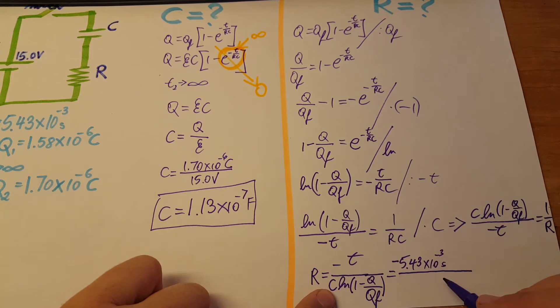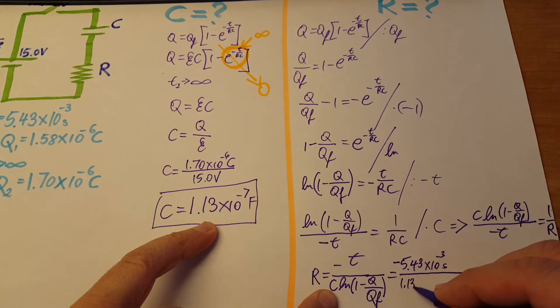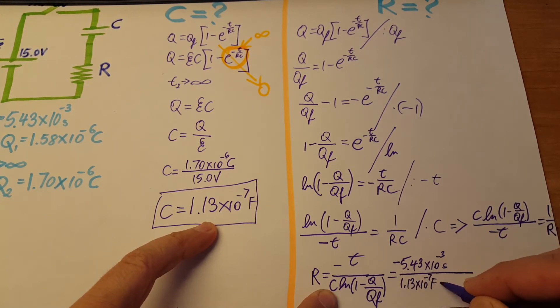Our capacitance we just found - it's over here - 1.13 times 10 to the negative 7 farads, times LN of one minus...